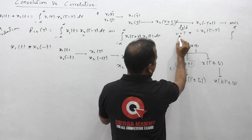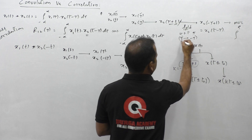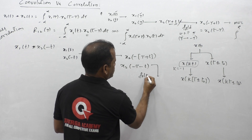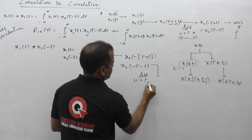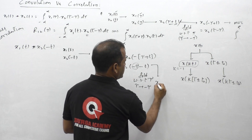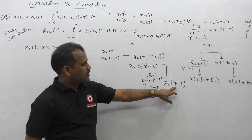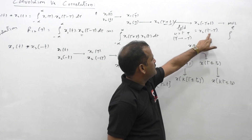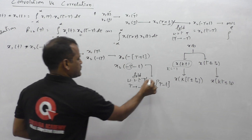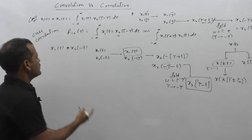After shifting, the next step is folding with respect to tau — meaning we replace tau with minus tau. Here also we fold with respect to tau: replacing tau with -tau makes minus tau become plus tau, so we get x2(tau - t) as the second function. Finally, this is multiplied with the first function x1(tau) and integrated. That is the convolution procedure — so the convolution integral gives us x1(tau) * x2(tau - t) d_tau.